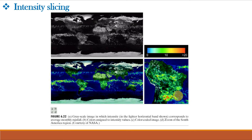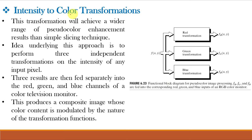Now let us understand intensity to color transformations or gray level to color transformations. This transformation is capable of achieving a wider range of pseudocolor enhancement results than simple intensity slicing. Here, the approach is to perform three independent transformations on the gray level of any input pixel. If we have a single plane grayscale image, we convert the image into three different planes: red, green, and blue.